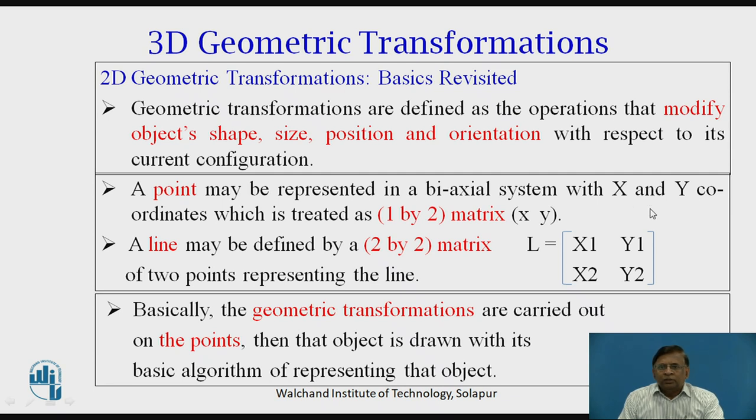What I mean is, if you are talking about a line, then in transforming a line, we are basically transforming these two points which represent the line. Then that line as a graphics feature is redrawn at a new position of the points with its basic algorithm of representation. Thus, again to repeat, geometric transformations are basically carried out on the points which are used to represent the objects and again at that new position objects are redrawn.